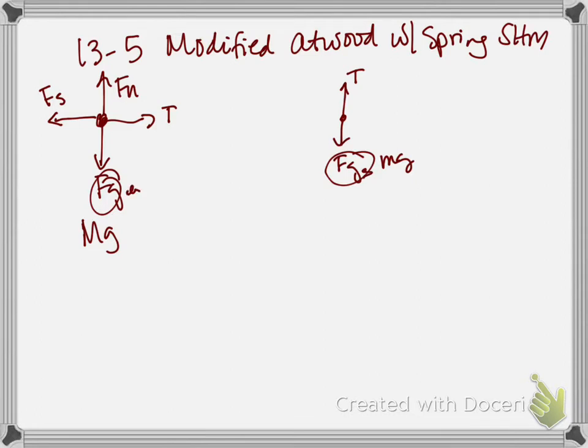So, the rubric for this, for the small mass, one point for two correctly labeled vectors, one up and one down, no horizontal vectors. For the large mass, two correctly labeled vertical vectors, one up and one down, two correctly labeled horizontal vectors, one left and one right. So you actually get three points for that.